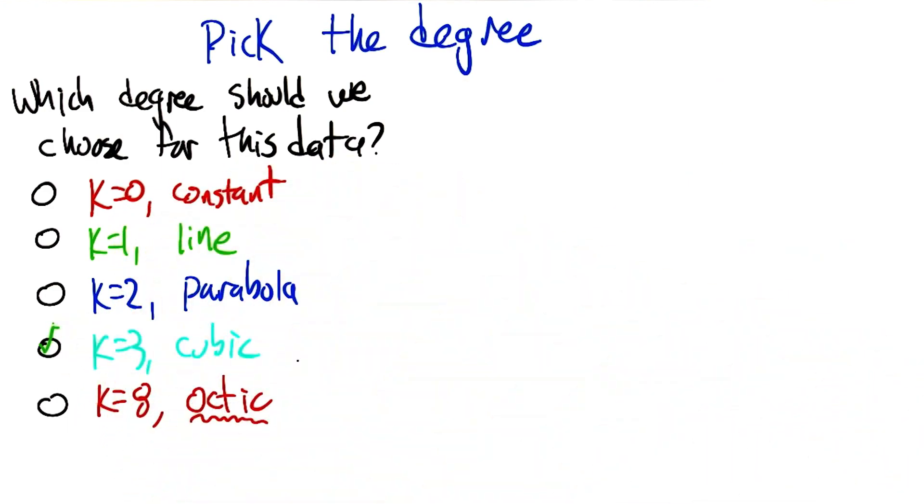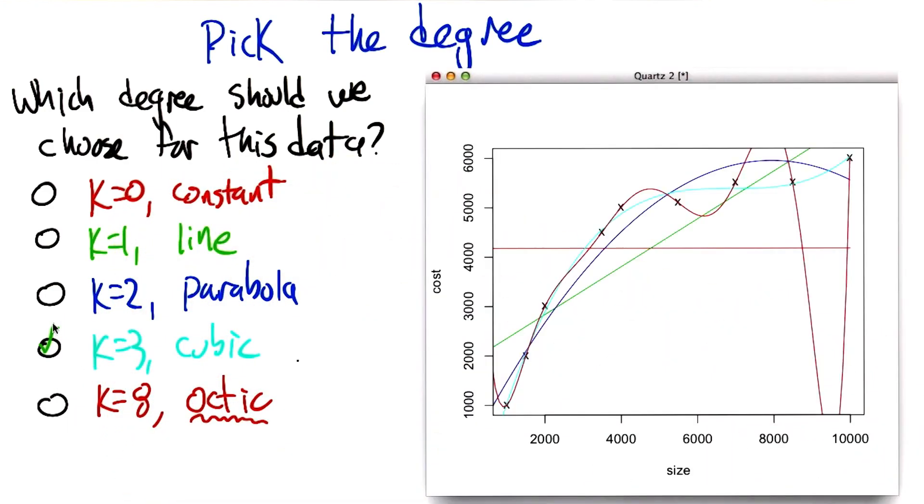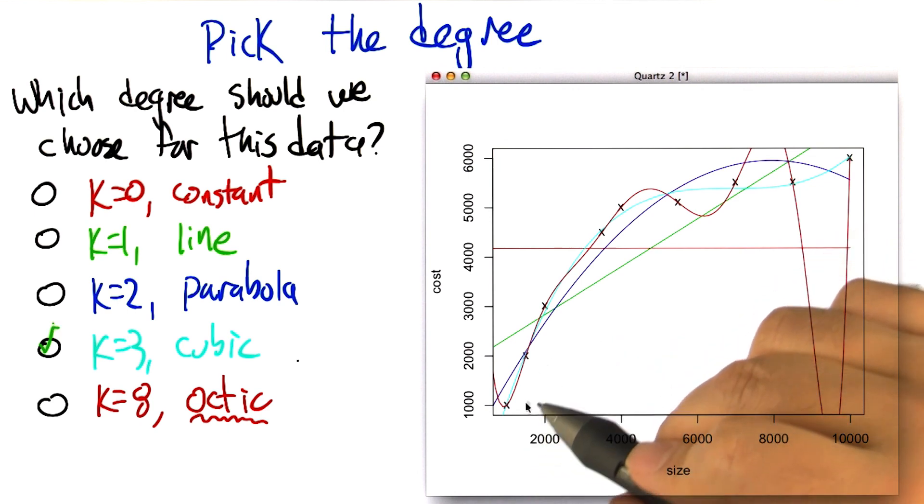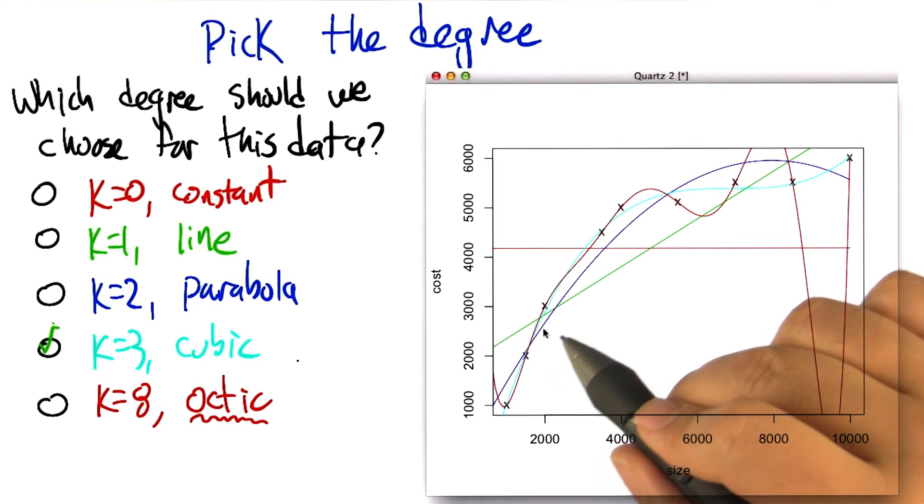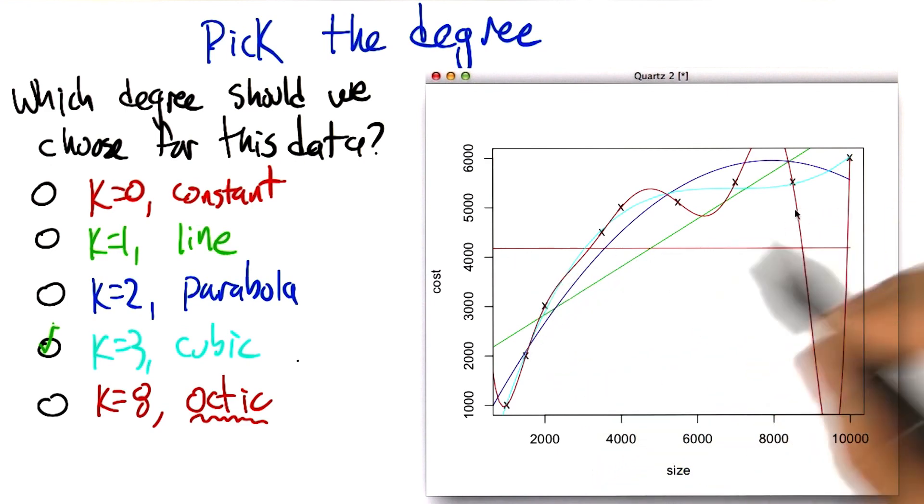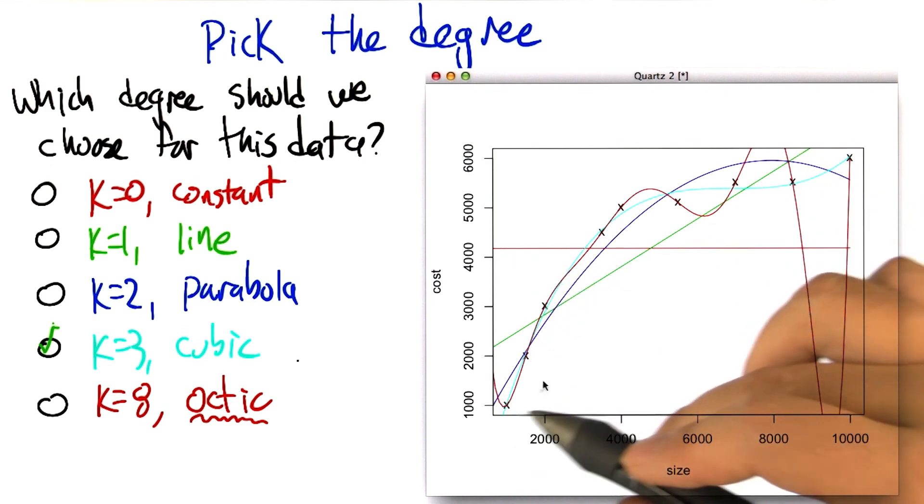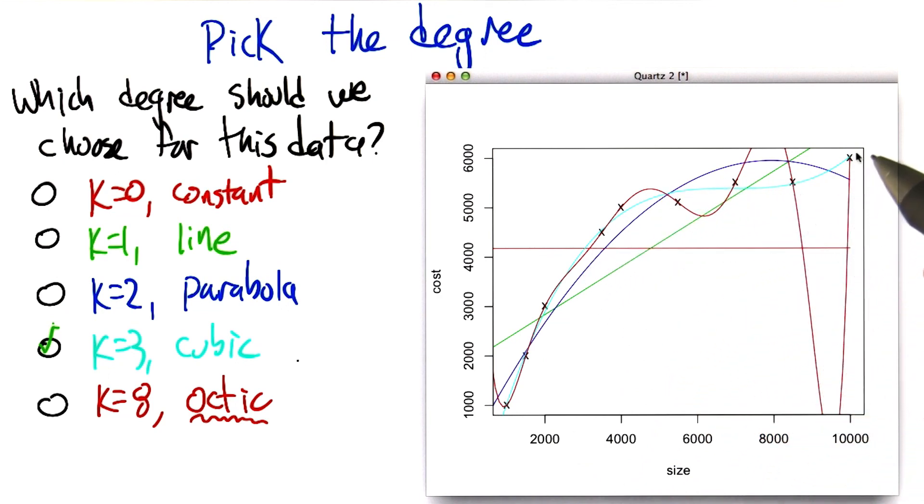And k equals 3. And I'll tell you why. Right, it's because 0, 1, and 2 seem to make quite a few errors. 3 does a pretty good job, but doesn't overcommit to the data.